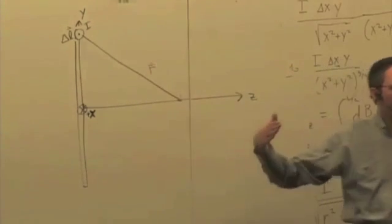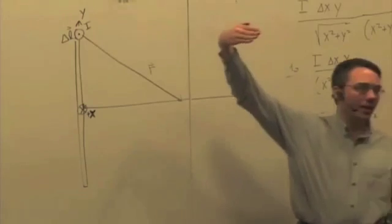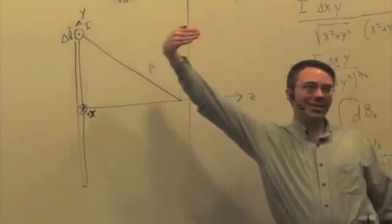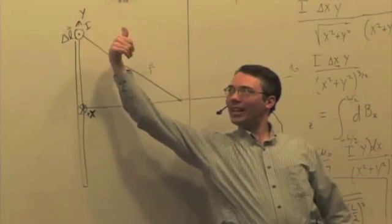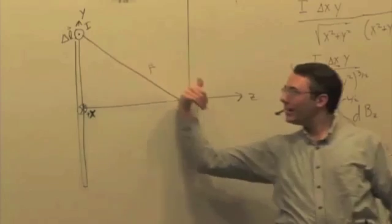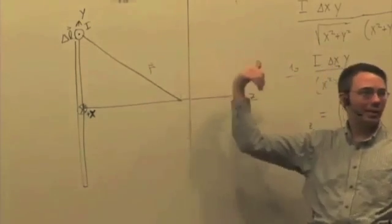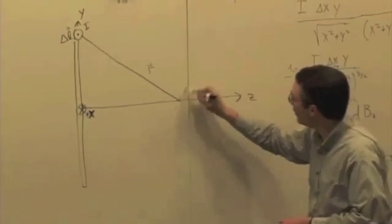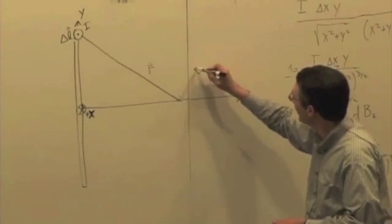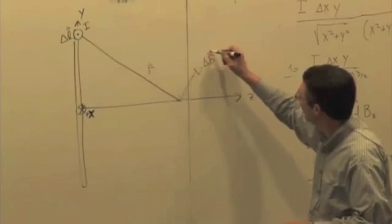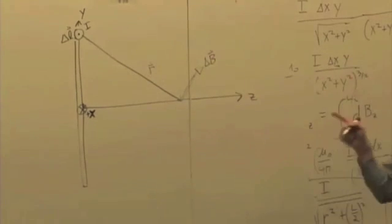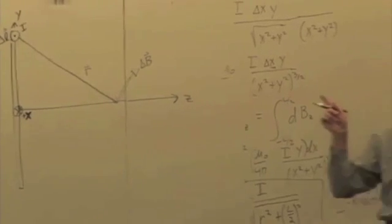So let's do the cross product. I delta L is coming out towards us. The r vector, curl the fingers down that way. And the thumb kind of points like that, right? So I'm going to get a delta B that has what components? It has a z and a y component.